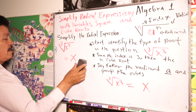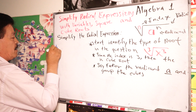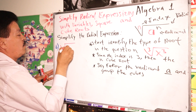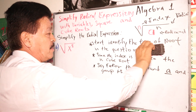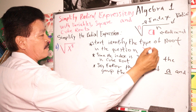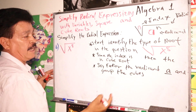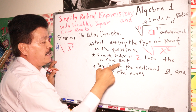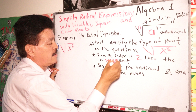Let's write another problem — problem B. Another example: the square root of x to the eighth power. Using the same steps, first identify the type of root in this problem: it's a square root. What is the index? The index is 2 — since there is no written index, it's a square root.